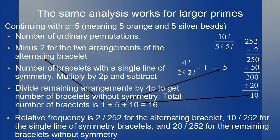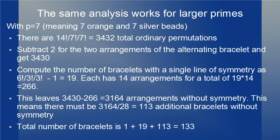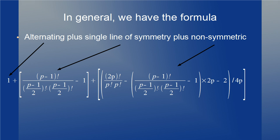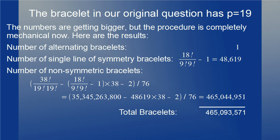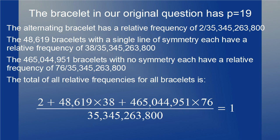Relative frequencies for p equals 5: 2/252 for the alternating bracelet, 10/252 for those with a single line of symmetry, and 20/252 for the remaining asymmetric bracelets. With p equals 7, you can do this as well, and here are the results. We can even come up with a general formula where all you need to do is plug in the number p. The formula looks very complicated but it's really just based on the simple principles we deduced above. The bracelet in our original problem has p equals 19, and here's what the result looks like. Since we have three classes of bracelets with different symmetry, let's spell out the relative frequencies for each and show that they all add up to one.